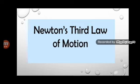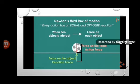Next, we are going to learn about Newton's third law of motion. Newton's third law states that every action has an equal and opposite reaction. However, action and reaction never act on the same body — they act on different bodies. For example, if a ball applies a force on a table, the table applies an equal and opposite force on the ball.